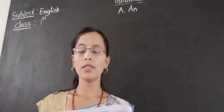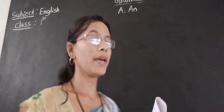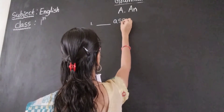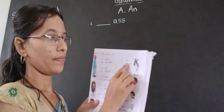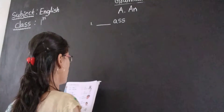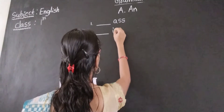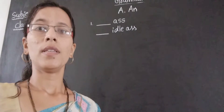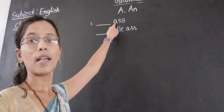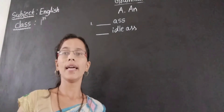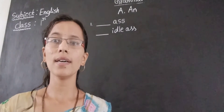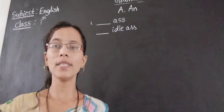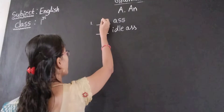So the first word — which is the first word? AS. First one: AS. See the first letter — A. A means that is a vowel sound. Beginning of vowel sound, what do we use? A or AN? We have to use AN. And AS.